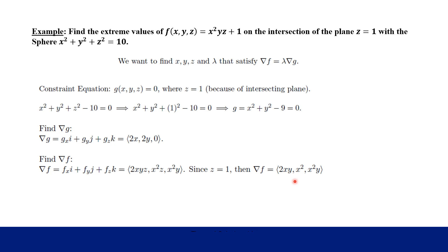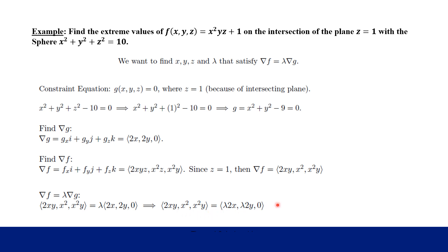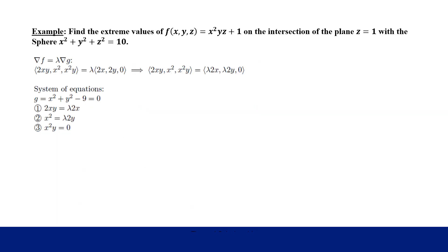We set the gradient of F equal to a lambda multiple of the gradient of G, giving us the core equation of the method. Breaking this into component equations — from the i, j, and k components — along with the constraint equation, we form a system of equations that we'll solve step by step.